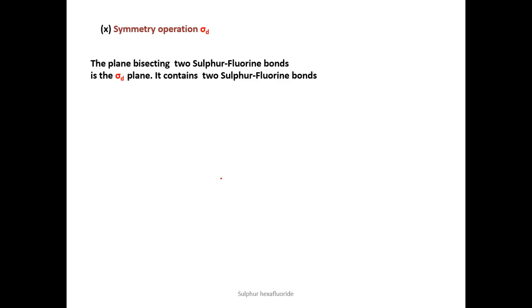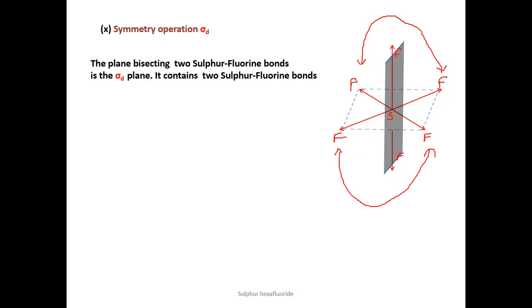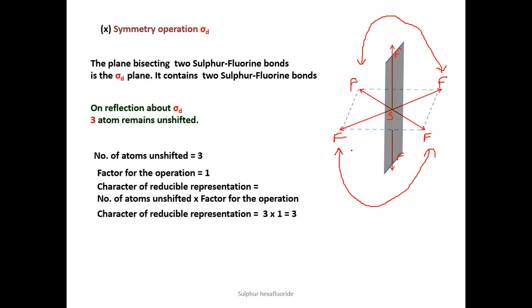For σD, the dihedral plane passes through one sulfur atom and two fluorine atoms, containing two sulfur-fluorine bonds and bisecting two others. Three atoms are present in the plane and remain unshifted. The other atoms get shifted during reflection. The factor for the operation is 1, giving a character of 3 × 1 = 3.